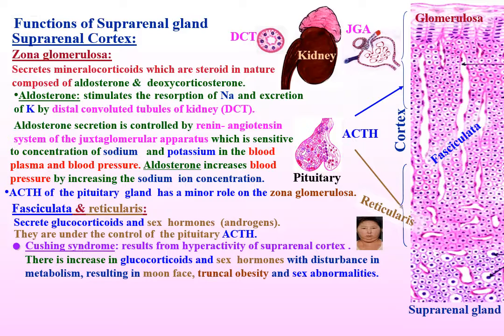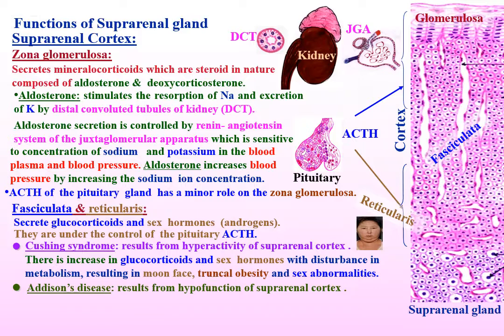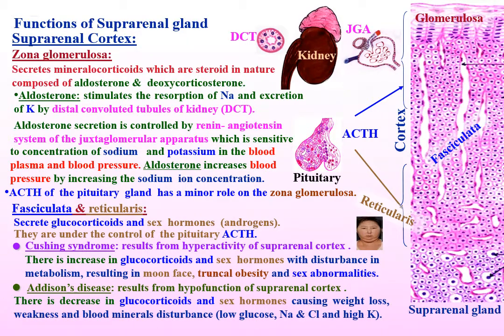Addison disease, on the other hand, results from hypofunction of the suprarenal cortex. There is a decrease in glucocorticoids and sex hormones, causing weight loss, weakness, and blood mineral disturbances.